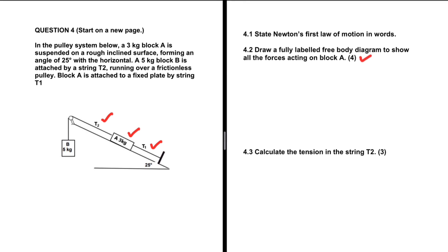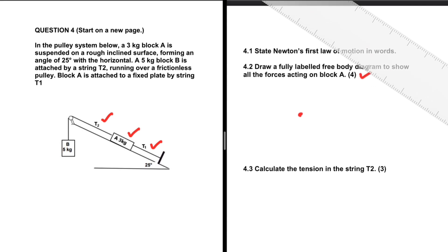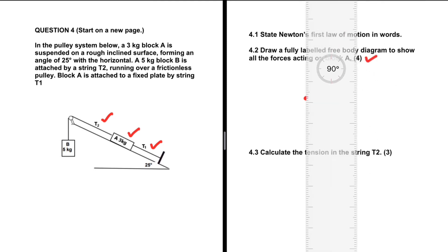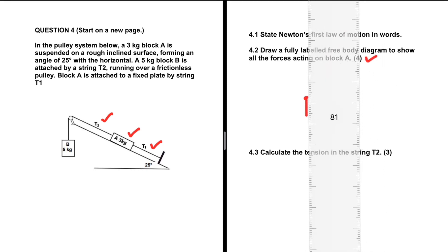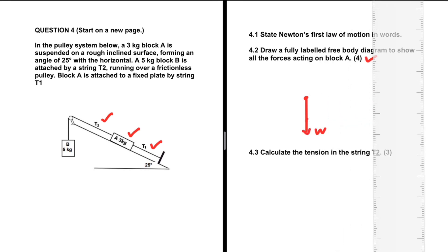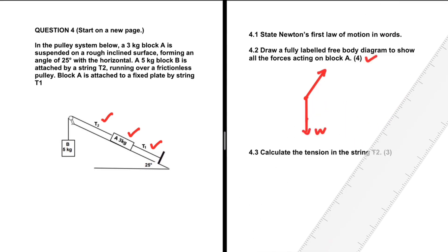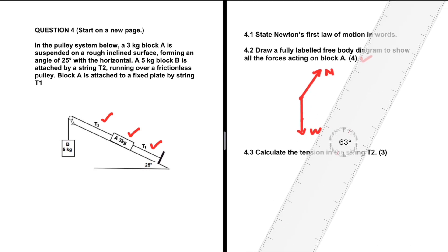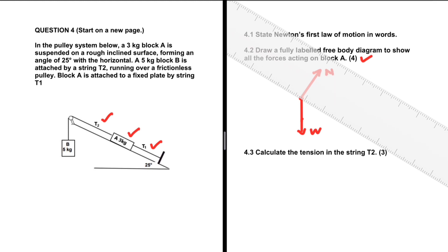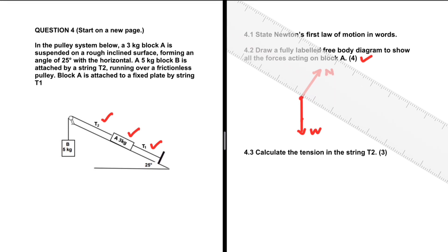First things first, we need the weight, because weight is always there — every particle in the universe is attracted by every other particle. Block A is resting on a surface, so we expect a normal force exerted by the surface, perpendicular to it. We also have tension T1 down the slope and tension T2 up the slope.